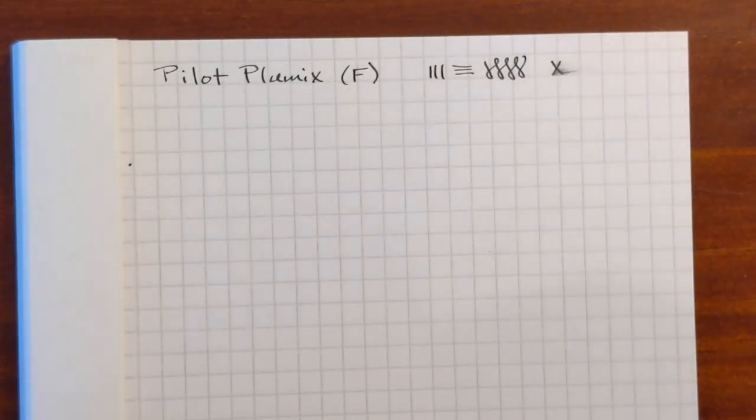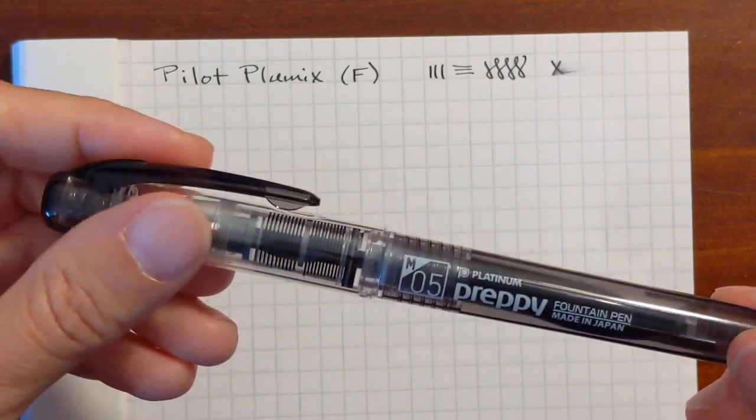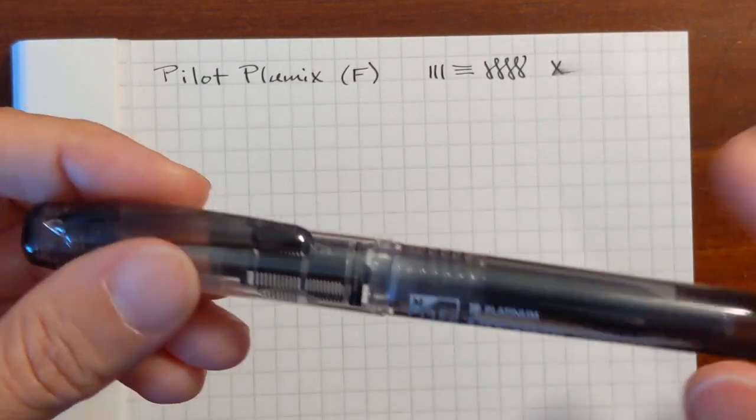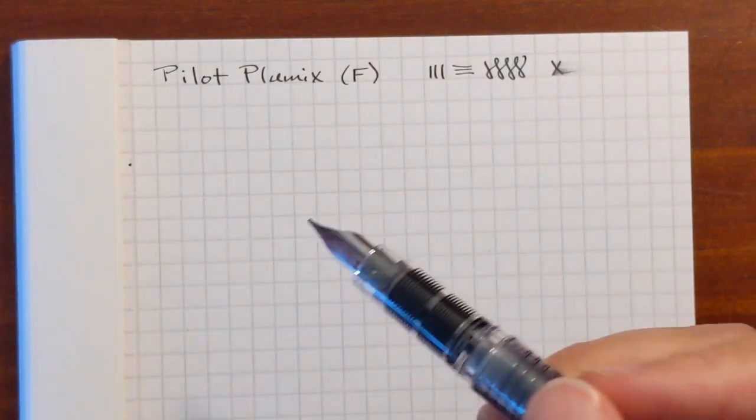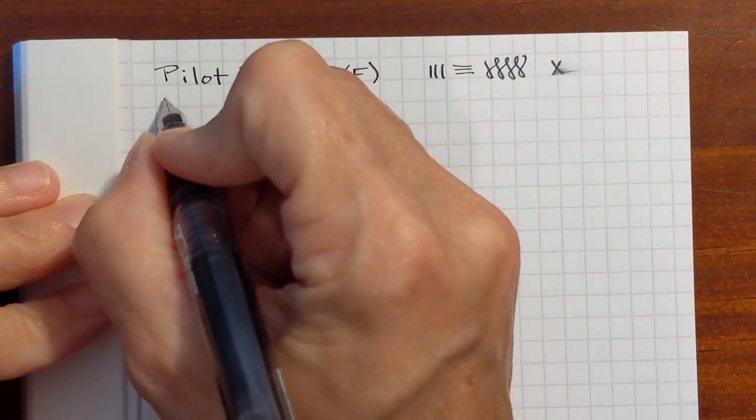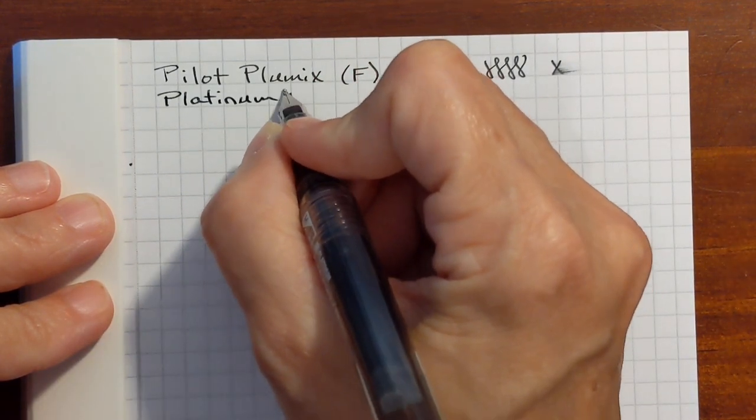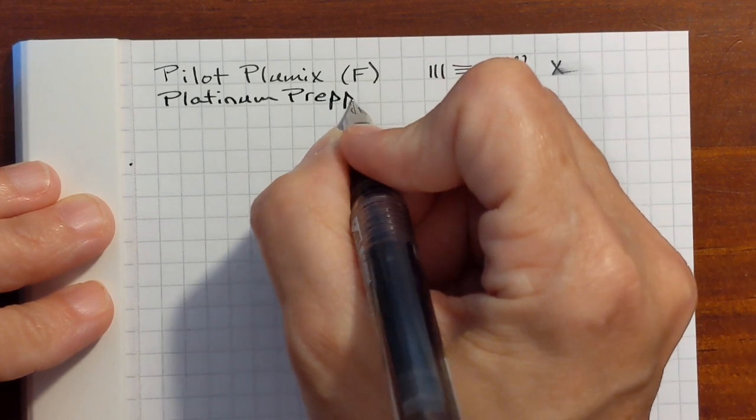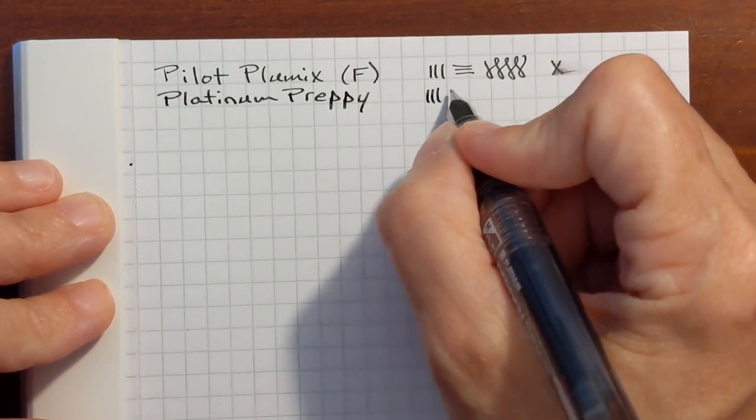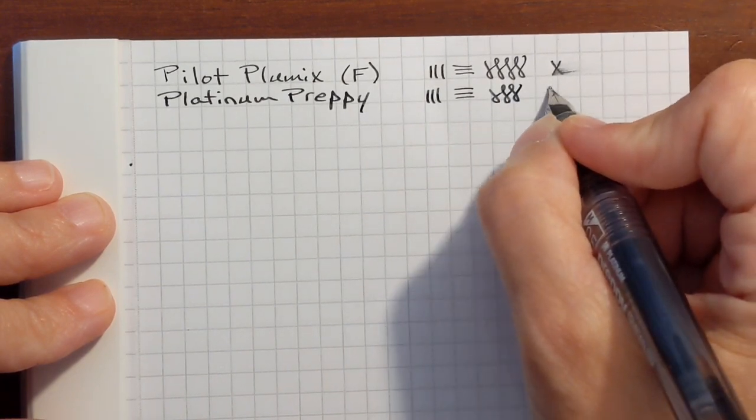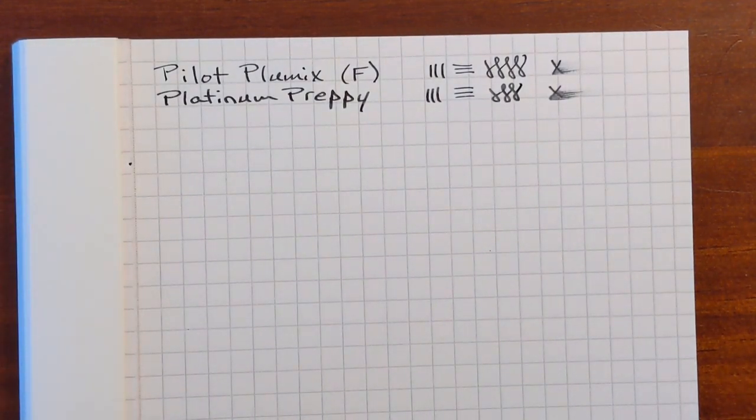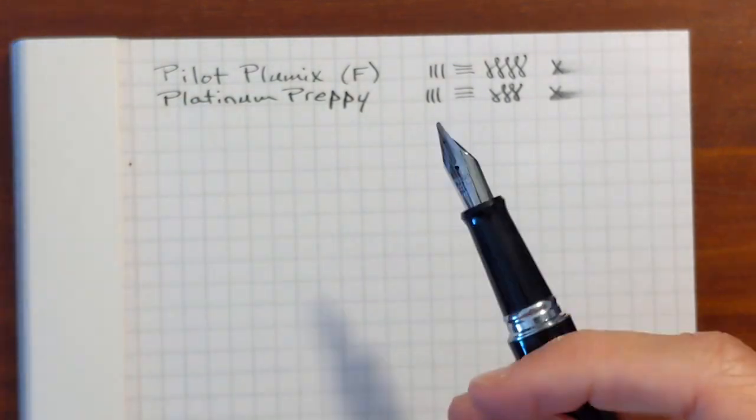Next I'm going to do the finer ones first. Now this is a Platinum Preppy with a medium nib that I ground myself into a kind of a stub-like or italic nib. Those are very similar. The Preppy maybe is a little bit wetter.